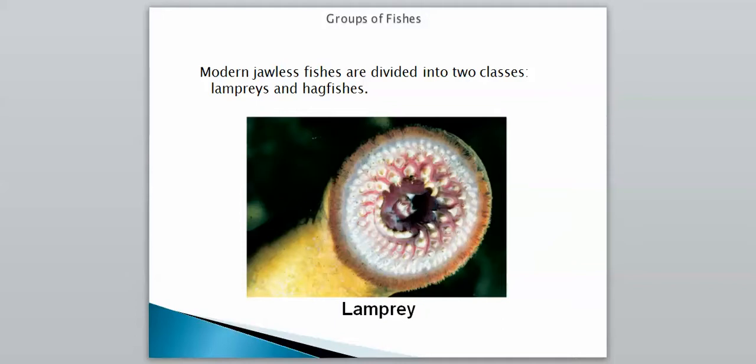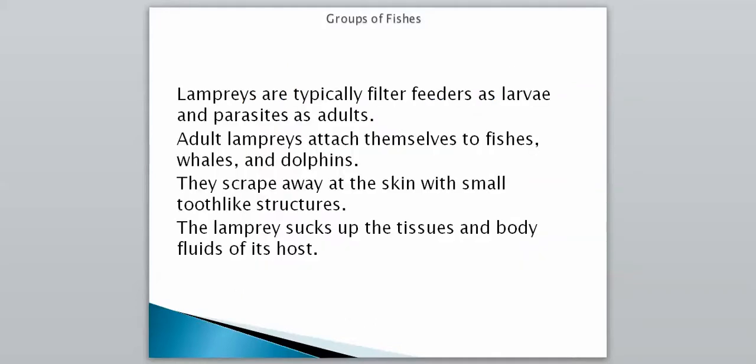Today we have two classes of jawless fish: lampreys and hagfish. There's a picture of a lamprey — a face only a mother can love. They don't have a jaw; they have a suction cup-like mouth with rows of tooth-like structures inside. Lampreys are typically filter feeders as larvae and parasites as adults, and we're going to look at this more in-depth in class.